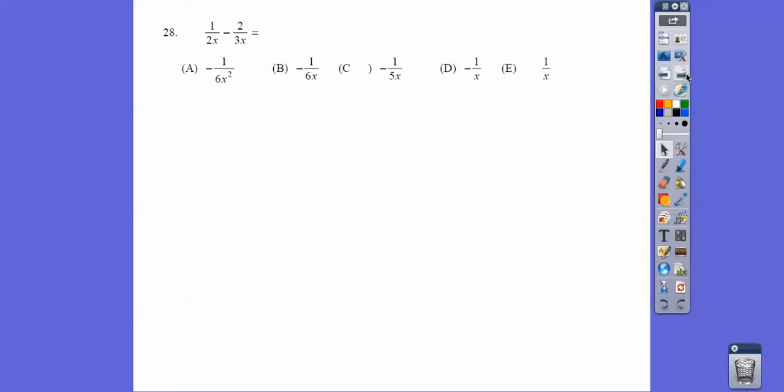Here we got to get a common denominator. They both have an x, and with the 2 and the 3 it's 6. So I multiply the first one by 3 over 3 and the second by 2 over 2, and I get 3 over 6x minus 4 over 6x, which is negative 1 over 6x.